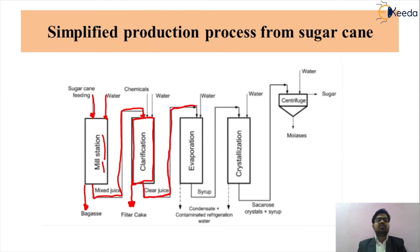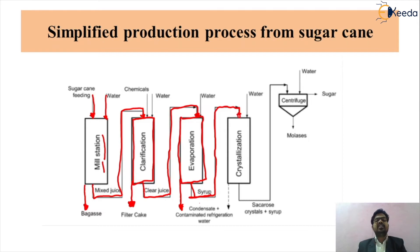The clear juice is sent directly to the evaporation process, where moisture is removed to obtain pure juice. The byproduct of evaporation is condensate contaminated refrigeration water, which is removed from the system. The pure juice then goes to the crystallization process — a very important process in the sugar industry — where different types of sugar crystals are produced as per consumer requirements. The byproduct waste from crystallization is also removed.